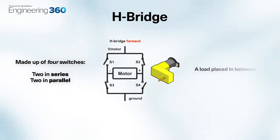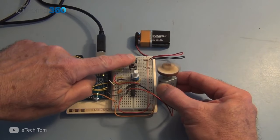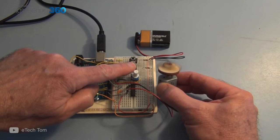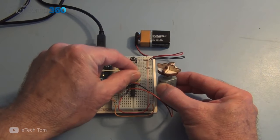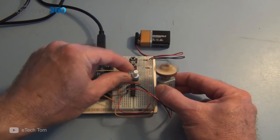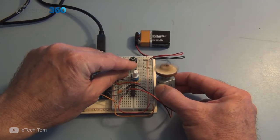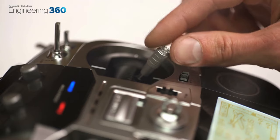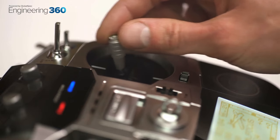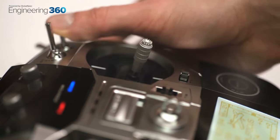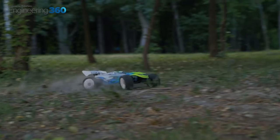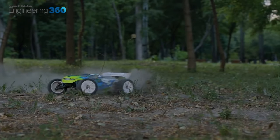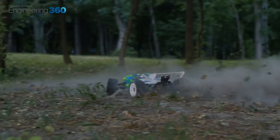This configuration enables the polarity of the voltage to be switched at the touch of a button. H-bridge circuits are also used with brushless motors — for example, in a remote control using a potentiometer to reverse the direction of the motor and slow down an RC car.